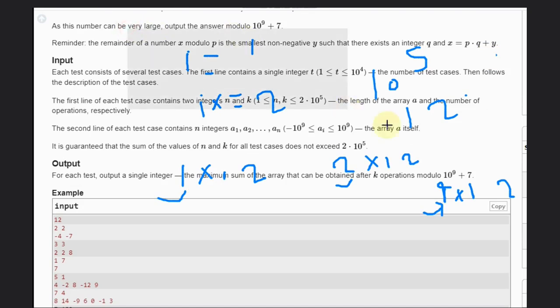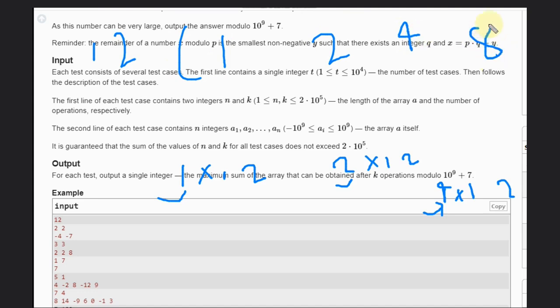But just think, think one thing. What if we take 12 as common, we take 12 common, then it will be 1, 2, 4, and 8, right?